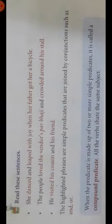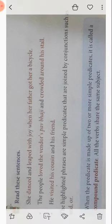Now we are going to study about the compound predicate. When the predicate is made up of two or more simple predicates, it is called a compound predicate. All the verbs share the same subject. The predicate is made up of two or more simple predicates joined together, and it is called a compound predicate.